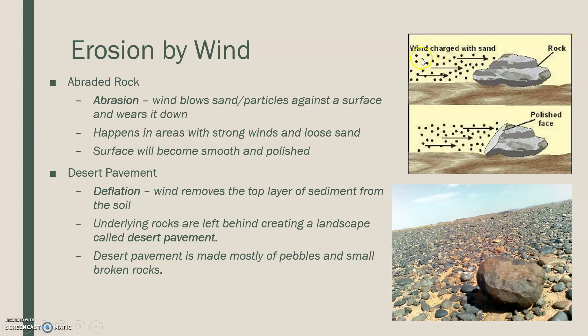In this picture, the wind is blowing little particles against a solid rock. Over many, many years, those particles change the way the rock looks and it develops what we call a polished face. Anywhere there's strong wind and loose sand, such as a desert, this happens frequently, allowing the surface to become smooth and polished over time.